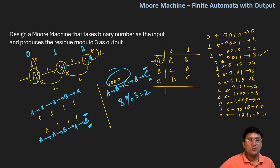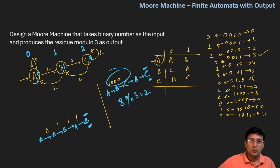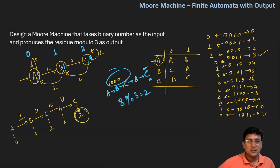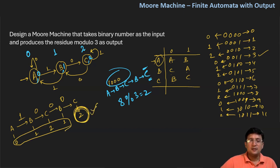This is the finite automata that will generate the given number modulus three. In the Moore machine, outputs are produced at every state. For input 1000, starting at A output zero is produced; moving to B output one; moving to C output two; on zero moving to B output one; on zero moving to C output two. Whatever is the last output produced is our answer — we don't care about intermediate outputs.